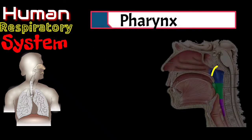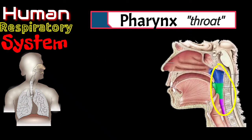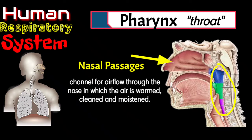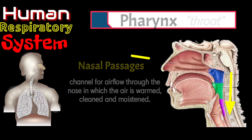Next part is the pharynx, also known as the throat. It lies behind the nasal passages. Nasal passages serve as a channel for airflow through the nose, in which the air is warmed, cleaned, and moistened. Your pharynx gathers air after it passes through your nose, and then the air is passed down to your trachea or the windpipe.